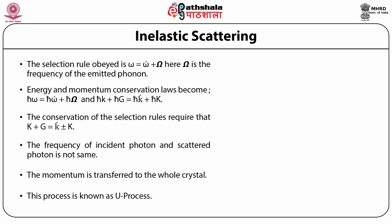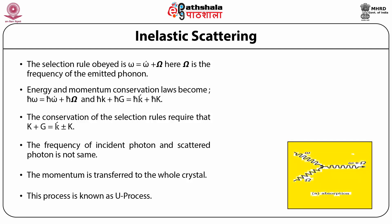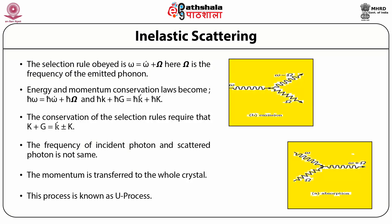The kinetic energy of the incident neutron is given by ℏ²k²/2mₙ and that of the scattered neutron is ℏ²k'²/2mₙ. Therefore, energy conservation becomes: ℏ²k²/2mₙ = ℏ²k'²/2mₙ ± ℏΩ, where ℏΩ is the energy of the phonon created or absorbed, as shown in the figure. Figure (a) is linked with absorption and figure (b) with emission, illustrating how a phonon is created or annihilated.